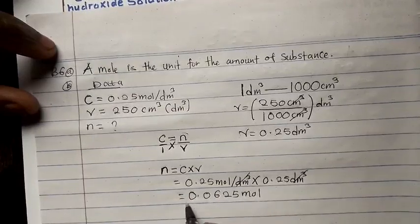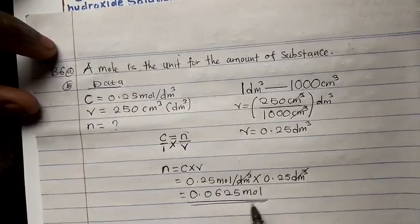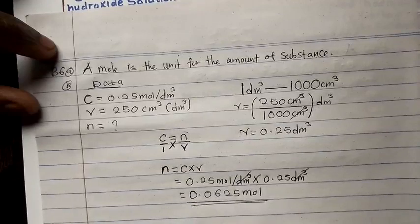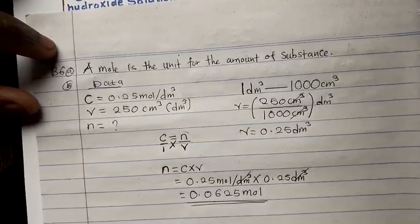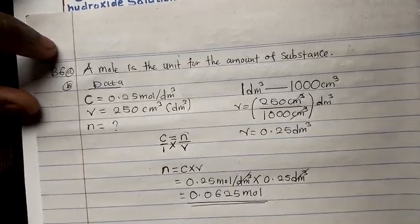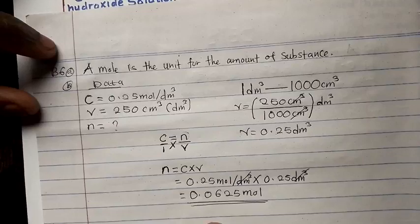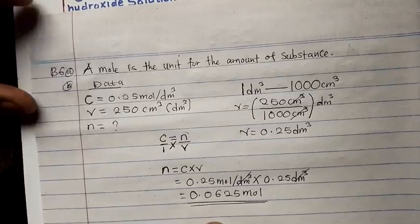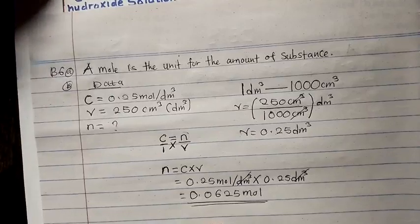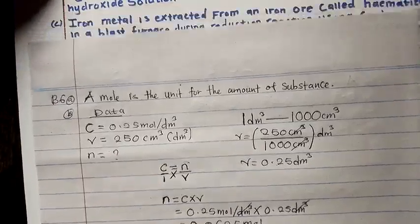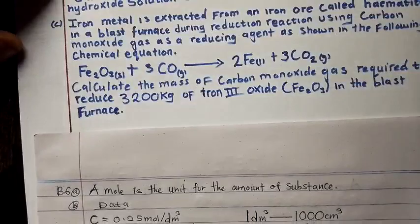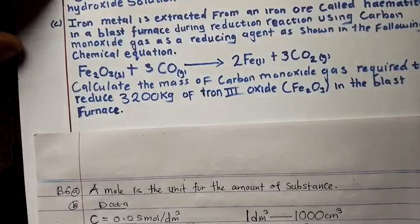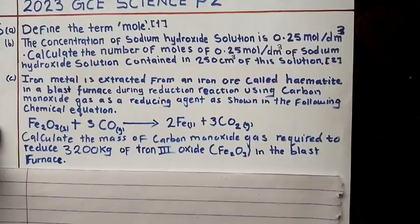Remember, the number of moles or the amount of substance is measured in moles. So 0.0625 moles is our final answer. Let's move on to the next question, Question C.